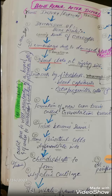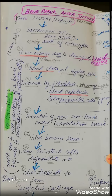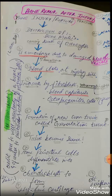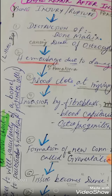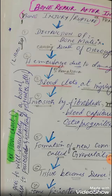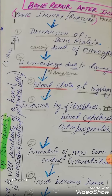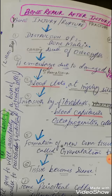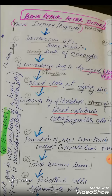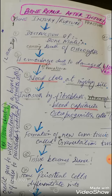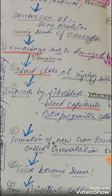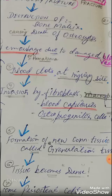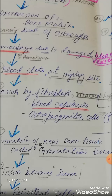Now this diagram presents a flowchart about bone repair dealing with injury or fracture. First, there is destruction of bone matrix, causing death of osteocytes. Next, hemorrhage occurs — a hematoma — due to damage of the blood vessels. Then blood clots at the site of injury, followed by invasion by fibroblasts, macrophages, and osteoprogenitor cells via blood capillaries.